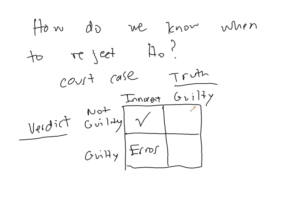Similarly, if the verdict is not guilty, but the person's really guilty, that's an error. You just said the person is not guilty, but they did commit the crime. And if the verdict is guilty and the person's guilty, of course, that's a good conclusion.